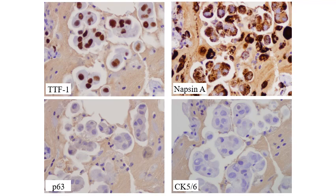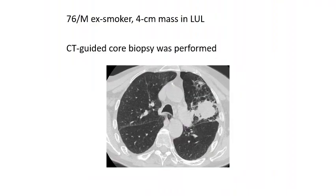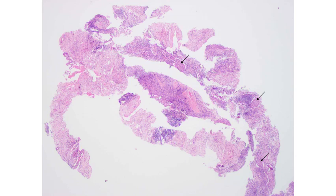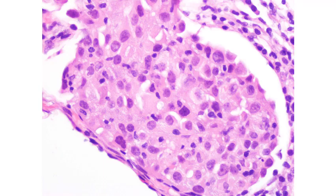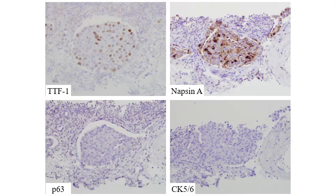Here's another example I presented at a major meeting: an elderly gentleman with a large mass that underwent CT-guided needle biopsy, showing cores of tissue with very small foci of carcinoma. There isn't enough architecture to be sure whether it's adenocarcinoma or squamous cell carcinoma. Immunohistochemistry is required for subtyping. Using the four-stain panel, TTF1 and napsin are positive, p63 and CK5/6 are negative — so this is an adenocarcinoma based purely on immunohistochemical subtyping.